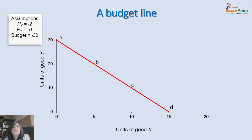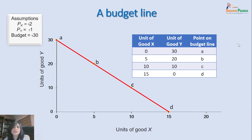We have to find the various combinations of X and Y which this consumer can purchase with his given money income of 30 rupees. I have made a hypothetical table from the price of X, price of Y, and the budget. For example, if he is buying 0 units of X — meaning he is completely spending his income on good Y — at a price of 1 rupee per unit of Y, he can buy 30 units of Y. This is point A on the budget line, showing one combination where the consumer is not buying any X and is only buying 30 units of Y.